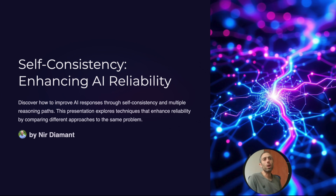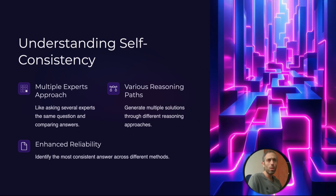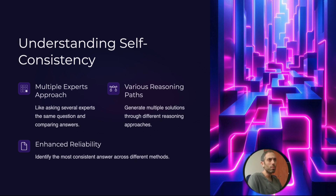We're going to discover how to improve AI responses through self-consistency and multiple reasoning paths. We want to think of it as a multiple-experts approach, where we ask several experts the same question and compare the answers. It's like generating multiple solutions through different reasoning approaches and then identifying the most consistent answer across different methods.